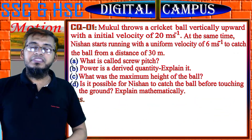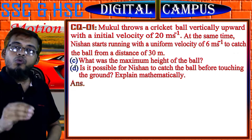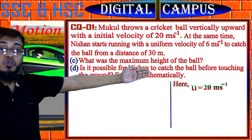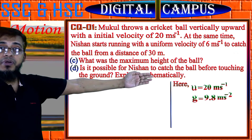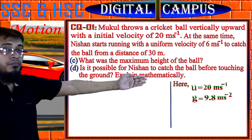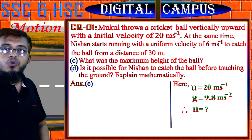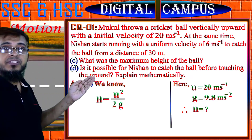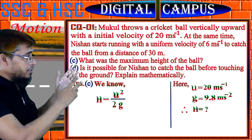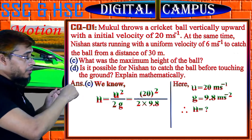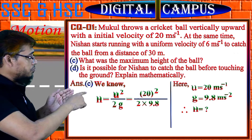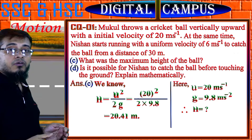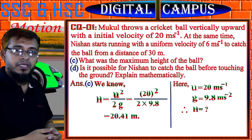Now answer of C: What was the maximum height of the ball? Given initial velocity u = 20 m/s and gravitational acceleration g = 9.8 m/s². We have the formula for maximum height H = u²/2g. Putting the values: H = 20² / (2 × 9.8) = 400 / 19.6, which equals approximately 20.41 meter. This is the answer of C.